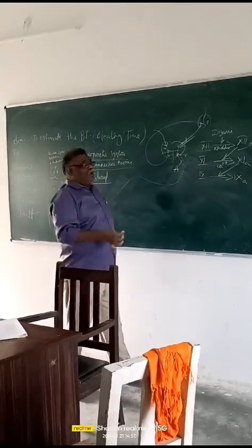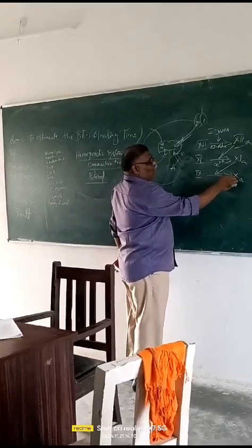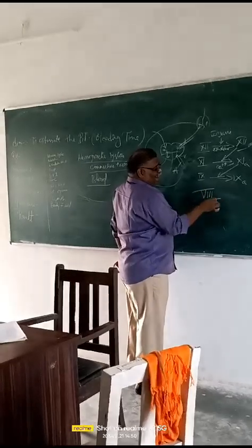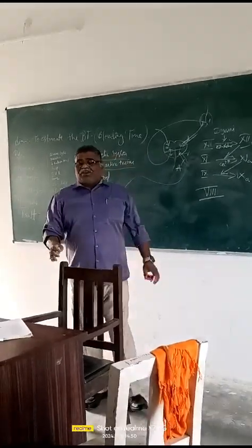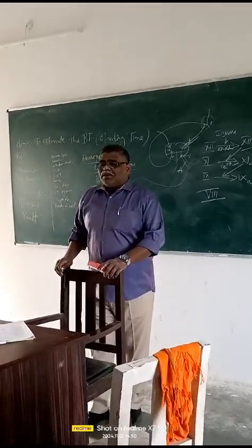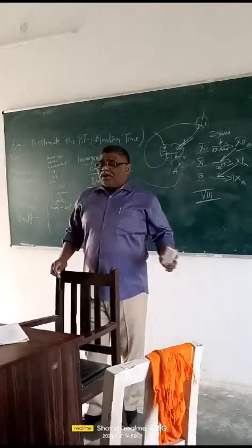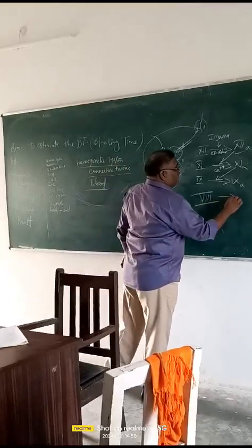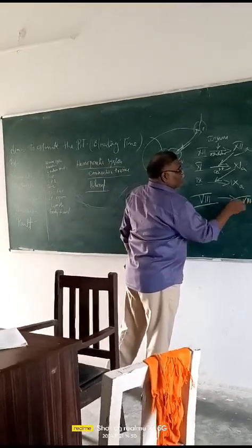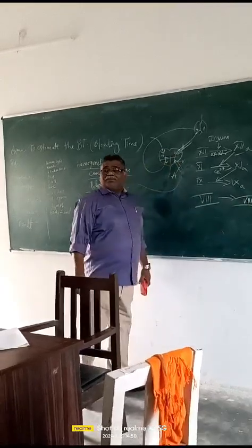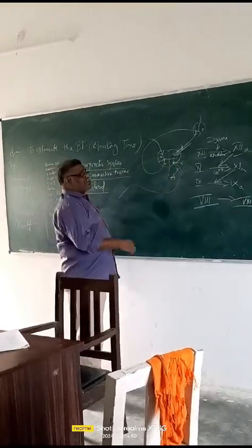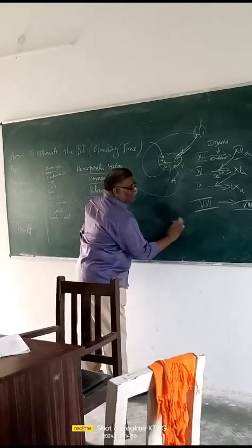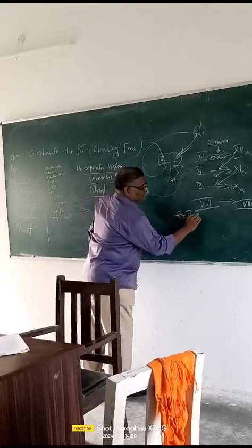The ninth factor will then convert factor 8 into active factor 8. There are two kinds of pathway mechanics — one is intrinsic and one is extrinsic. I am presenting the common part. The eighth factor will be activated into active eighth factor. There is a substance in our blood called thromboplastin, which is a pro-thromboplastin.